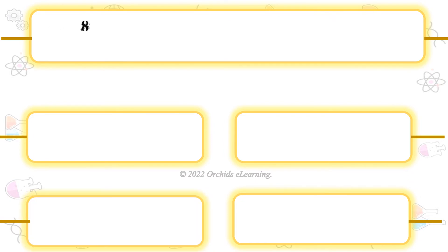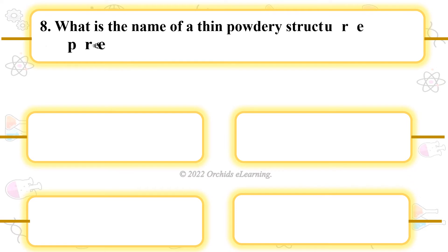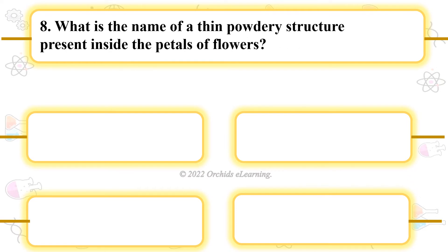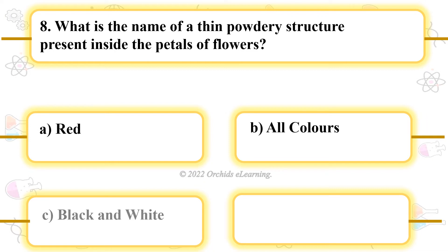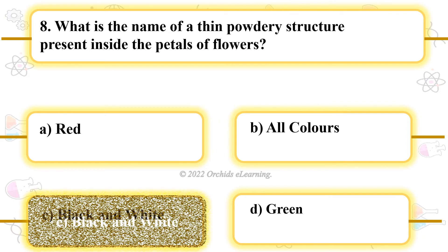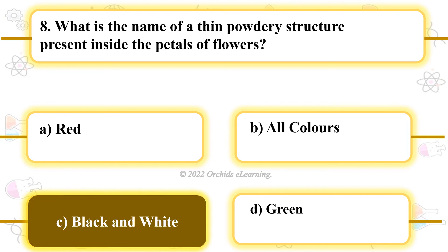What is the name of a thin powdery structure present inside the petals of flowers? C. Black and white.